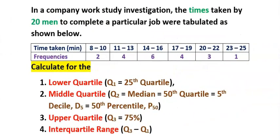Consider this question: in a company work study investigation, the times taken by 20 men to complete a particular job were tabulated as shown below. Calculate the lower quartile, middle quartile, upper quartile, and interquartile range using a cumulative frequency graph.